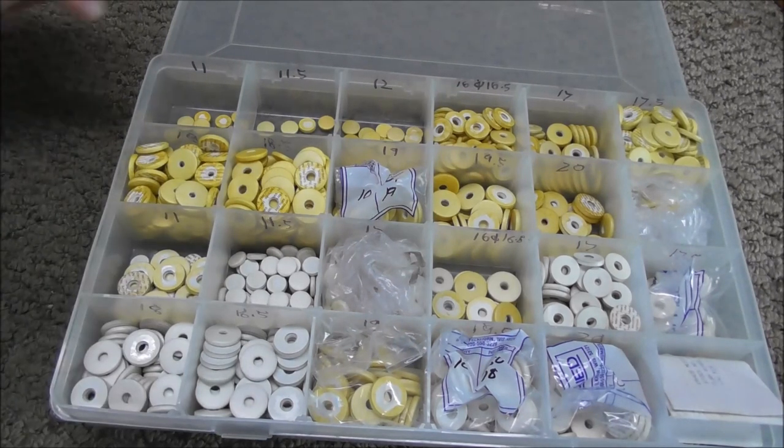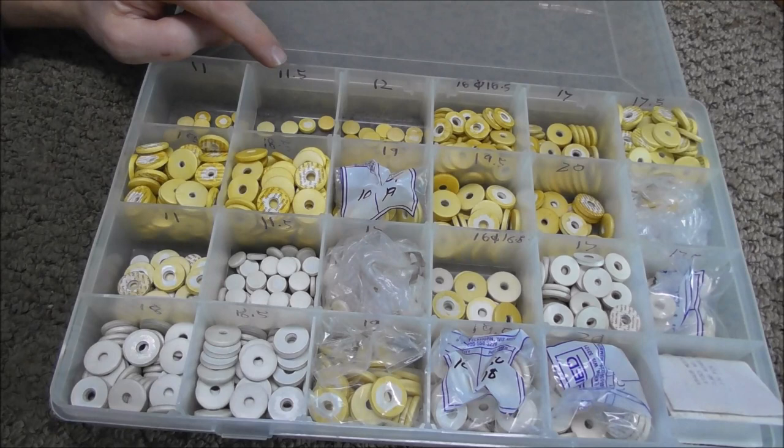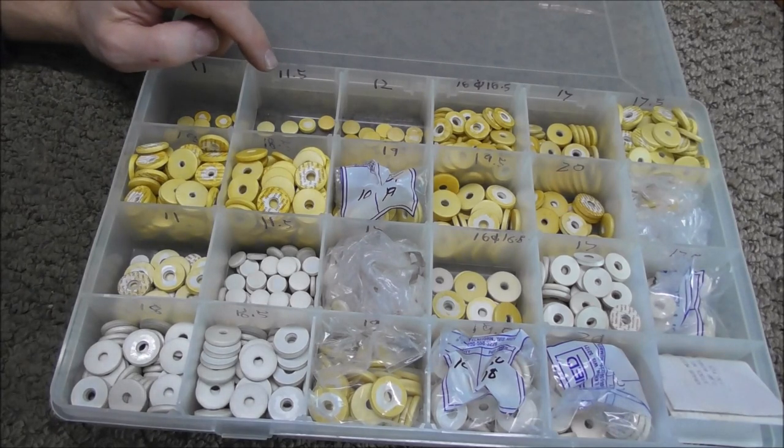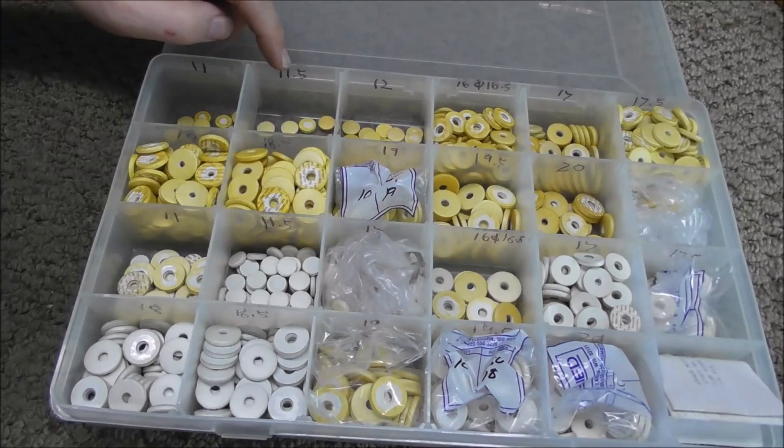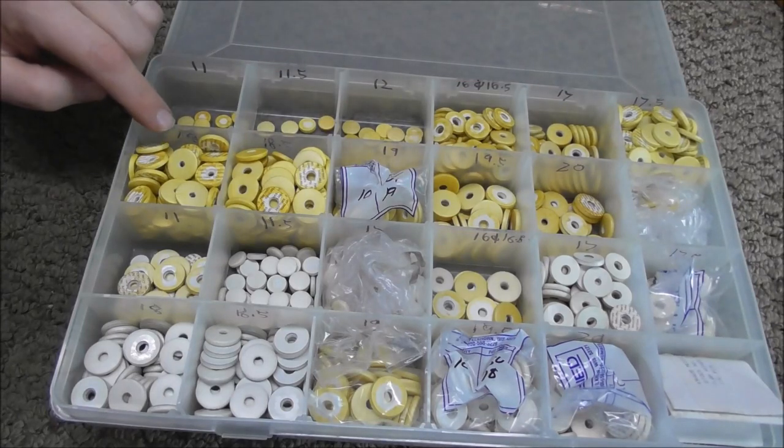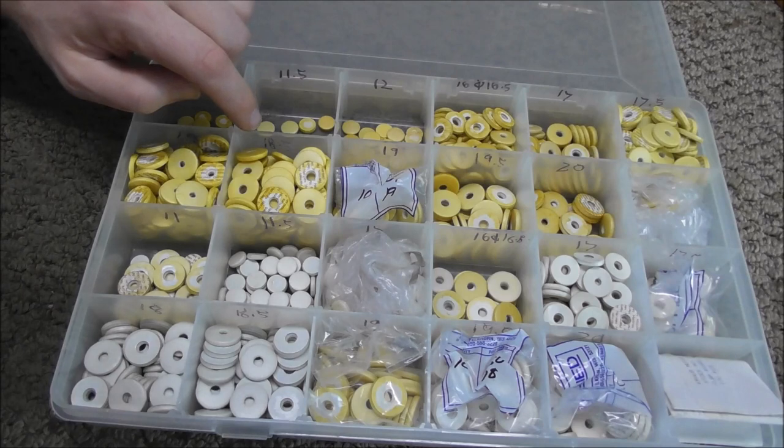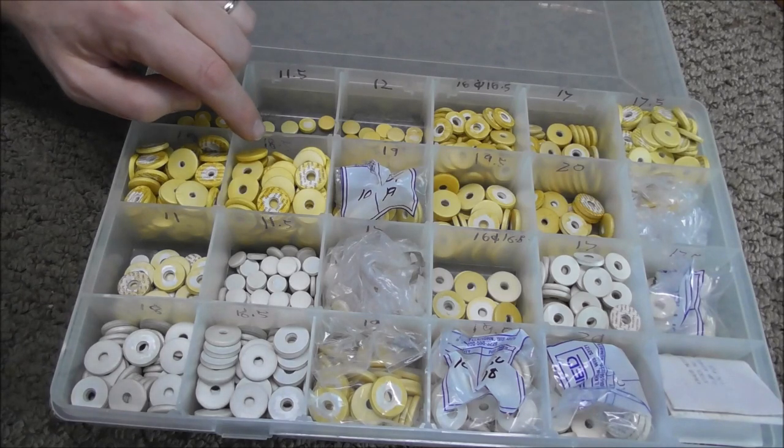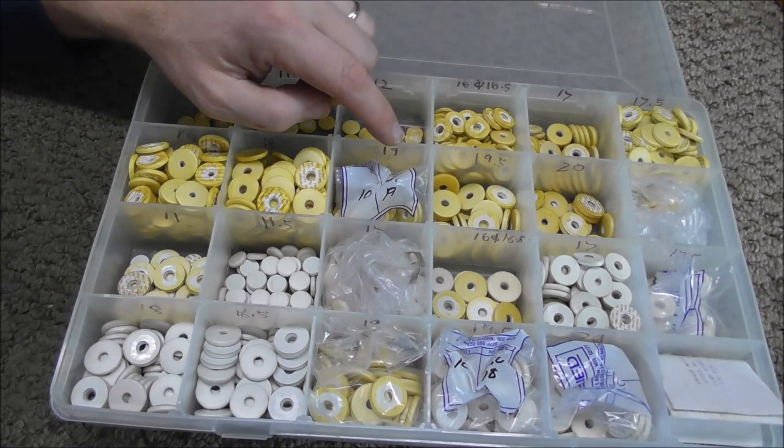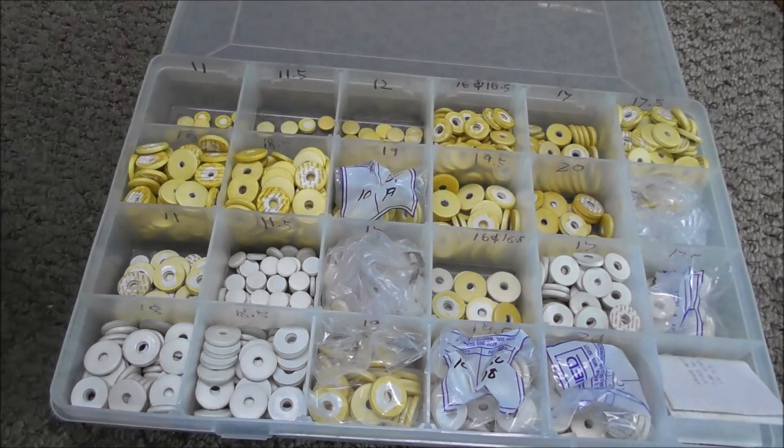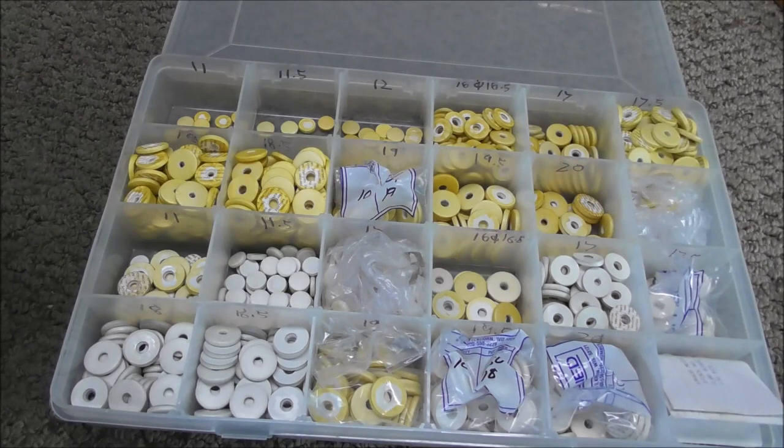The pad sizes I use the most are the 11.5 for the trill keys and the high C key. And it looks like I'm running low on those. I'll have to order some of those soon. And then the 17.5, 18 and 18.5 are the most common for the rest of the keys on the body of the flute. And sometimes on the foot joint they have larger keys and they're usually 19 or 19.5. Those are the ones I use the most, but different manufacturers use different sizes for their keys.